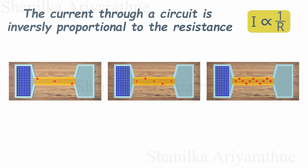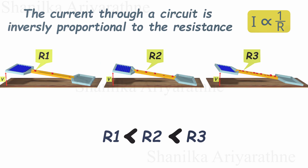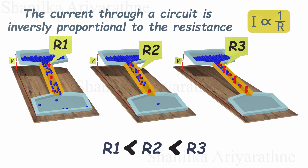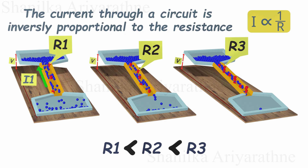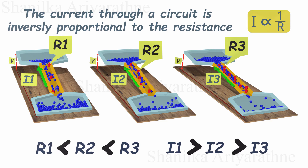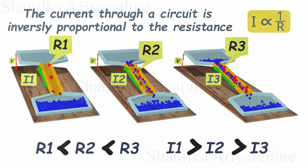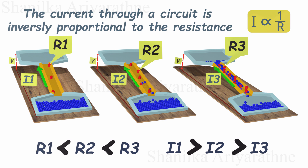Now let's illustrate what happens to the current with different resistances. The current is inversely proportional to the resistance. Here the resistance is increasing from R1 to R3 — it's clear the current is decreasing from I1 to I3. If we increase the resistance, electrons face more collisions, slowing down their movement, which lowers the current. If we decrease the resistance, electrons face fewer collisions, speeding up their movement, which increases the current.